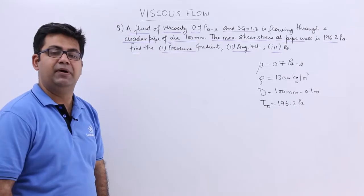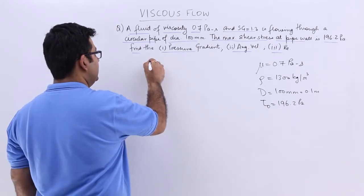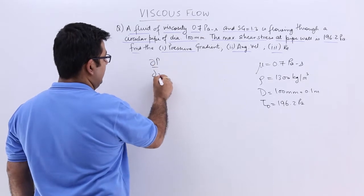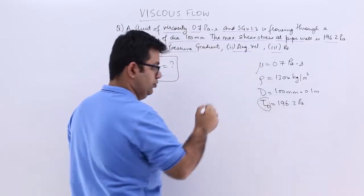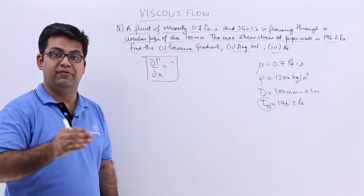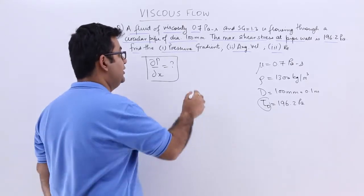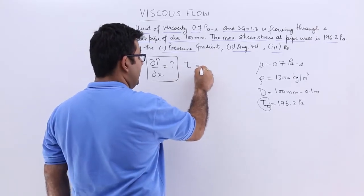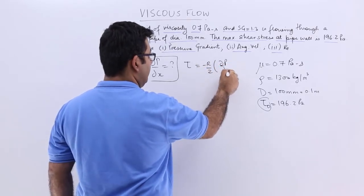We have to find the first part is to calculate the pressure gradient. That is curly P upon curly X has to be found out. Now remember this, you are given tau. So if you have seen the video on this analysis, you know in a very systematic manner, you would understand and remember that tau is equal to minus r by 2 into curly P by curly X.